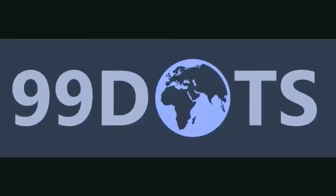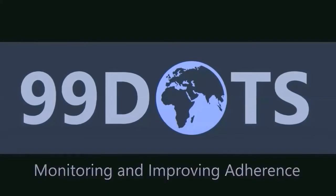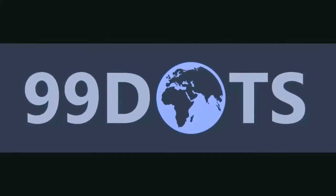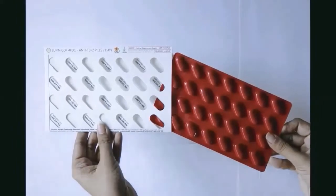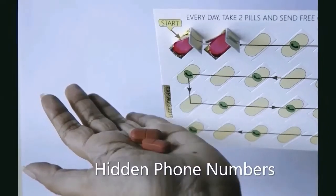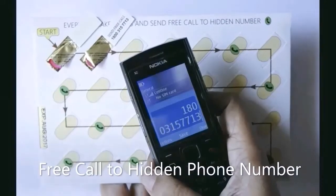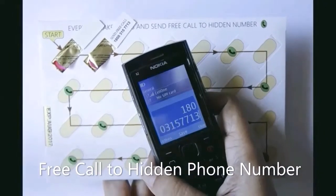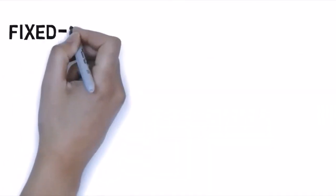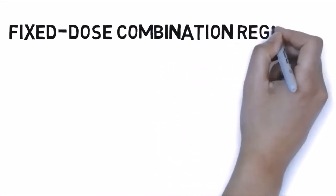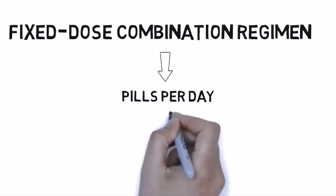Another low-cost approach for monitoring and improving TB medication adherence is 99DOTS. In this, the blister pack is wrapped in a custom envelope which includes hidden phone numbers that are visible only when doses are dispensed. The patient makes a free call to the hidden phone number, yielding high confidence that the dose was in hand and has been taken. Fixed dose regimen has also been introduced, in which the pills per day are given based on the weight bands of the patients.